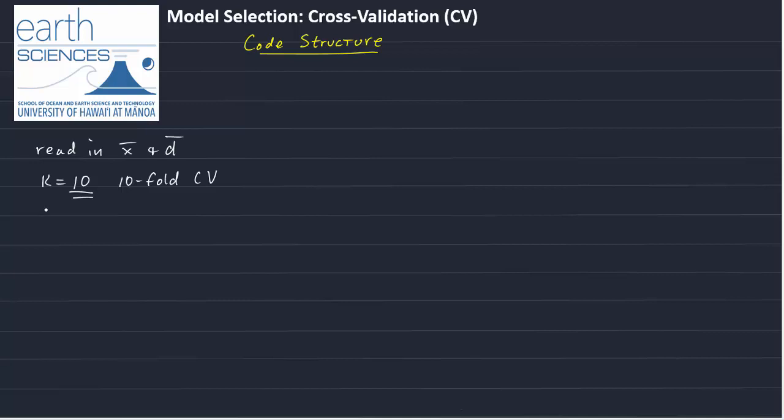And so the size of the sample that you're going to leave out each time, we'll call that n out. That's just the number of data points divided by k. So we're going to partition our data into ten, in this case, ten groupings or partitions. And so each one of those partitions that we leave out is going to have n divided by k numbers in them.